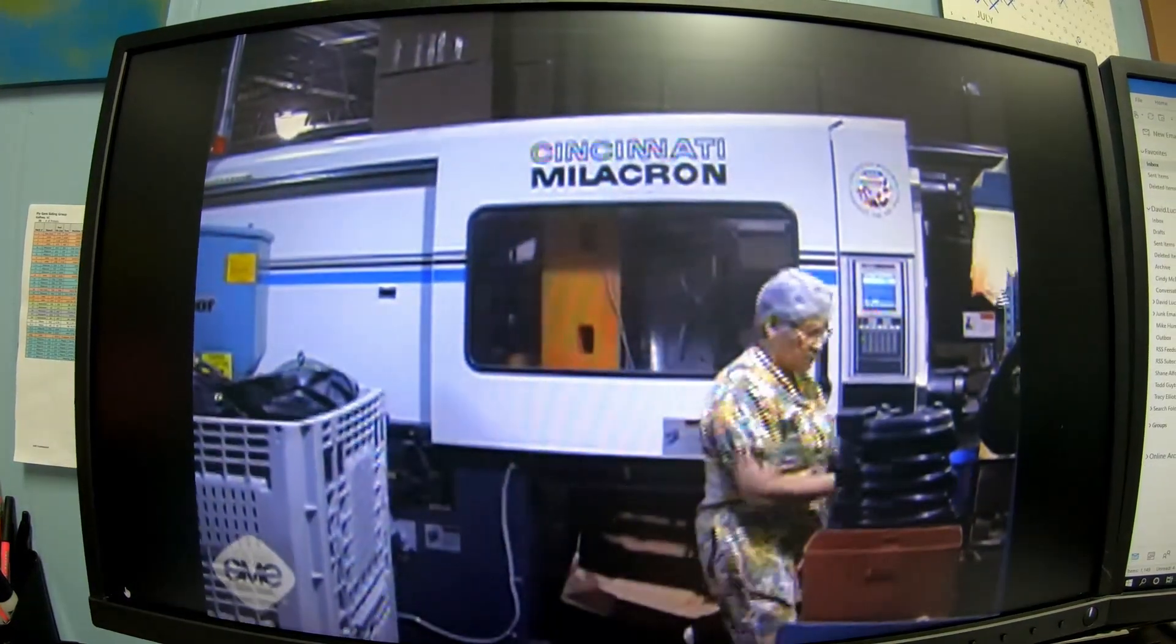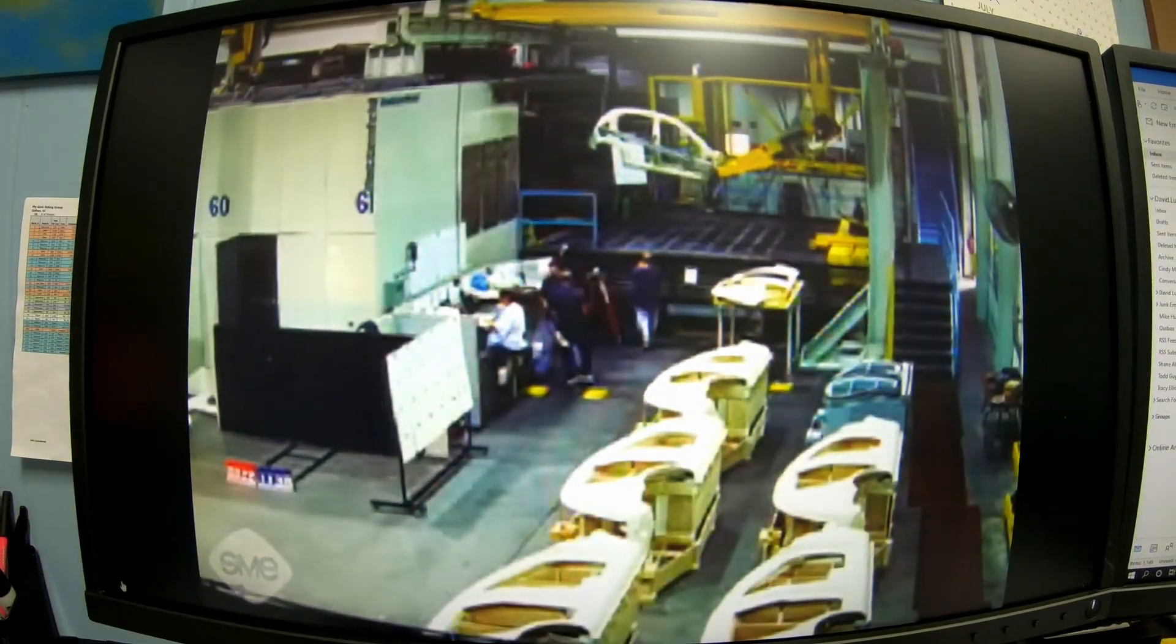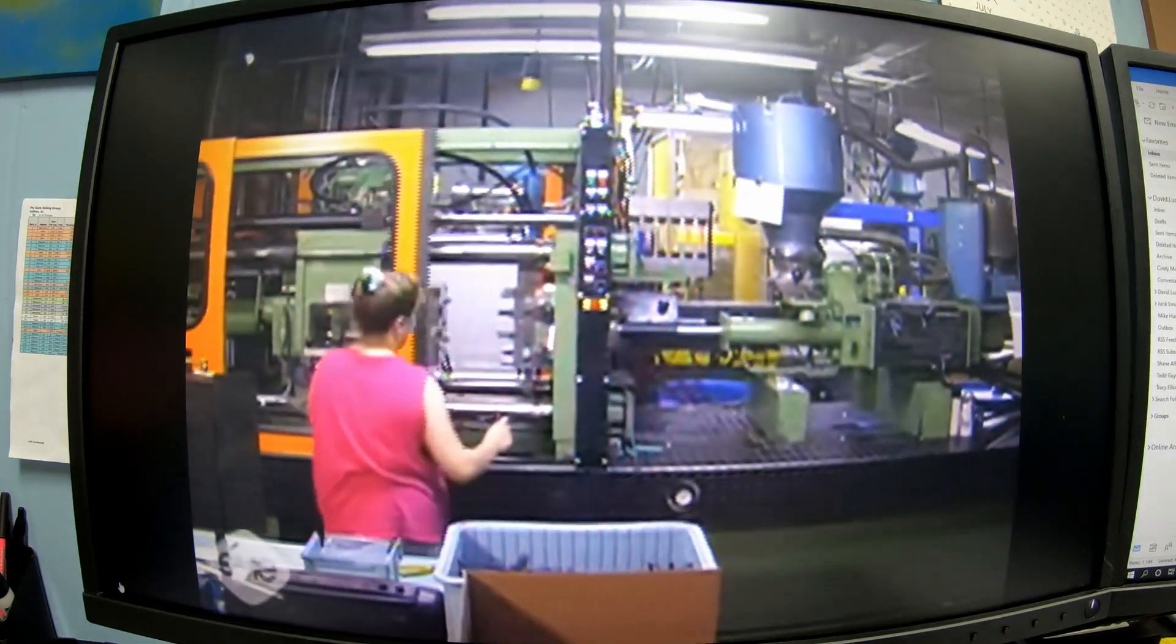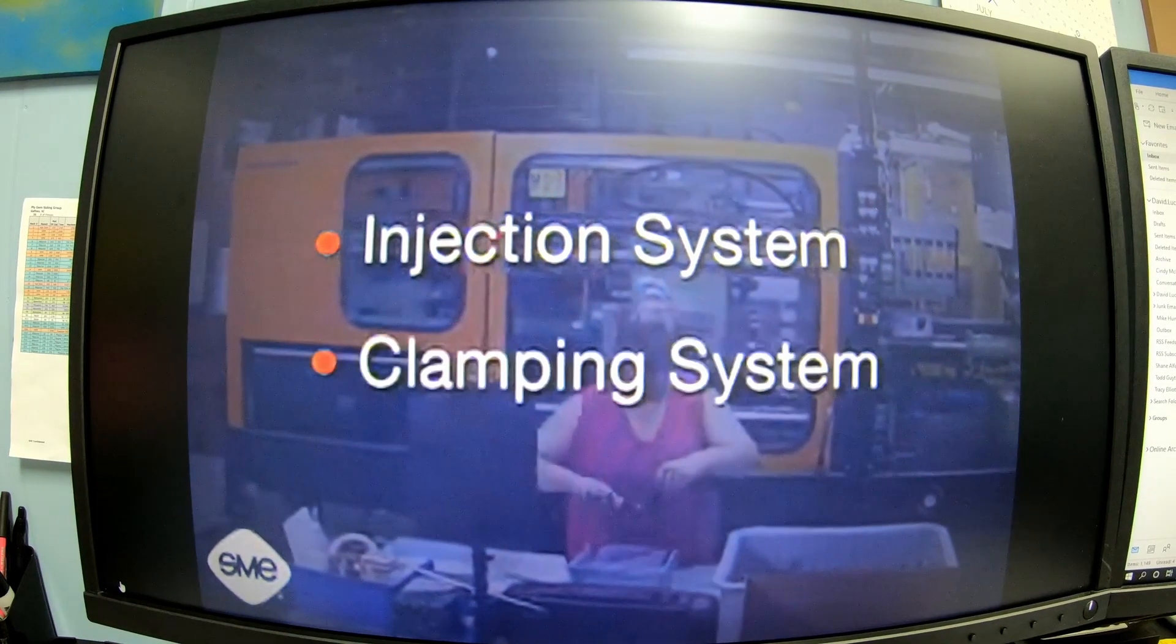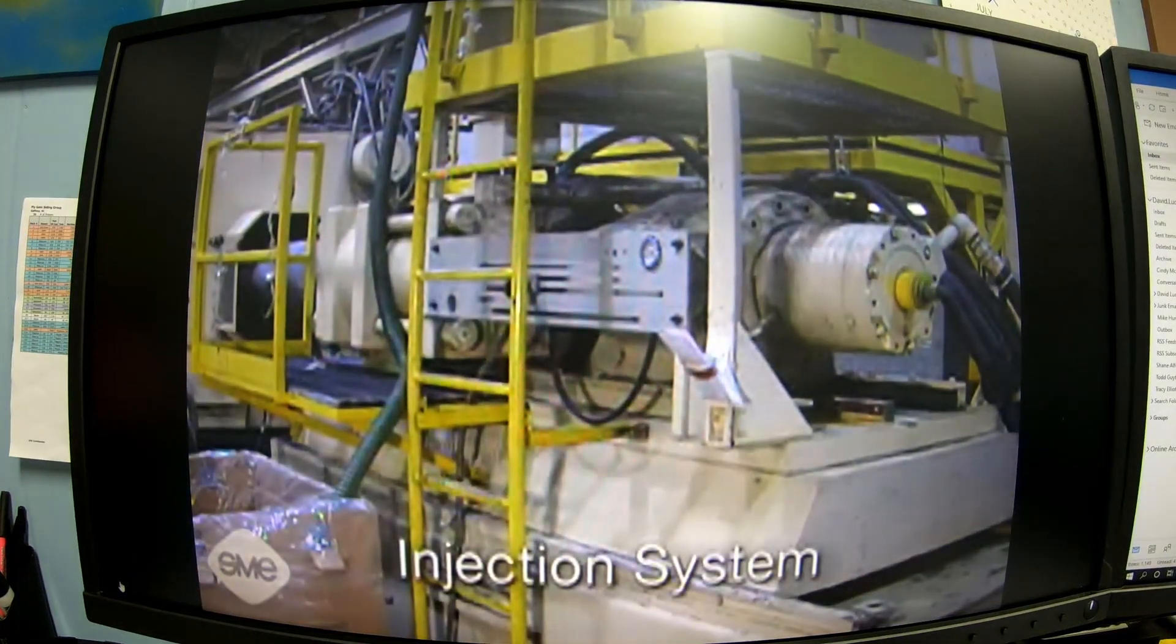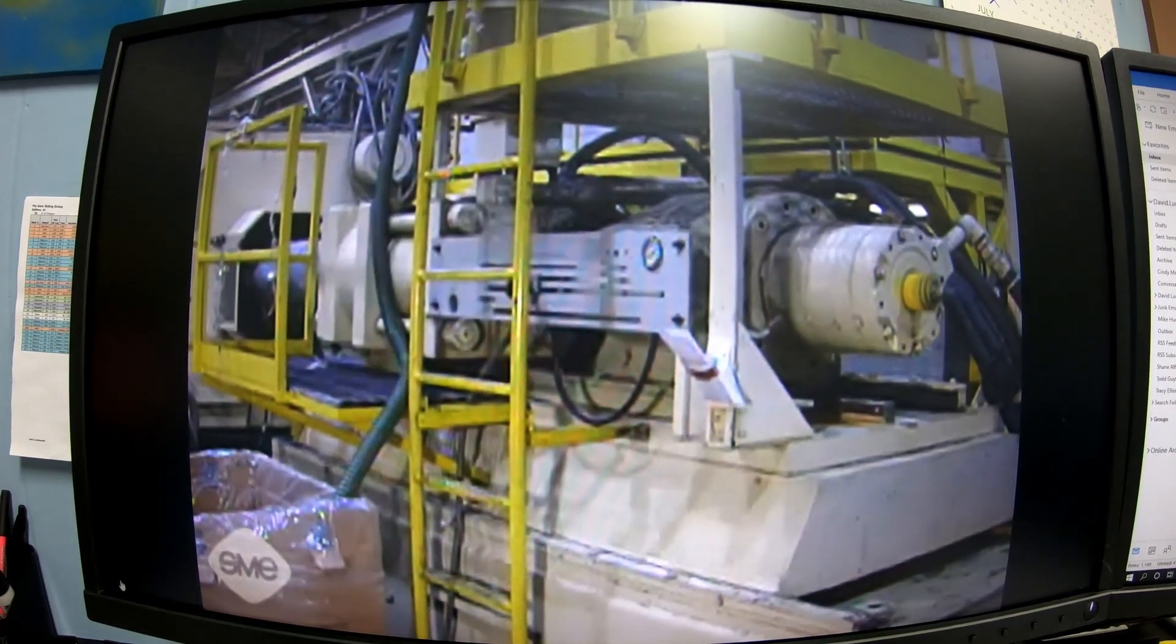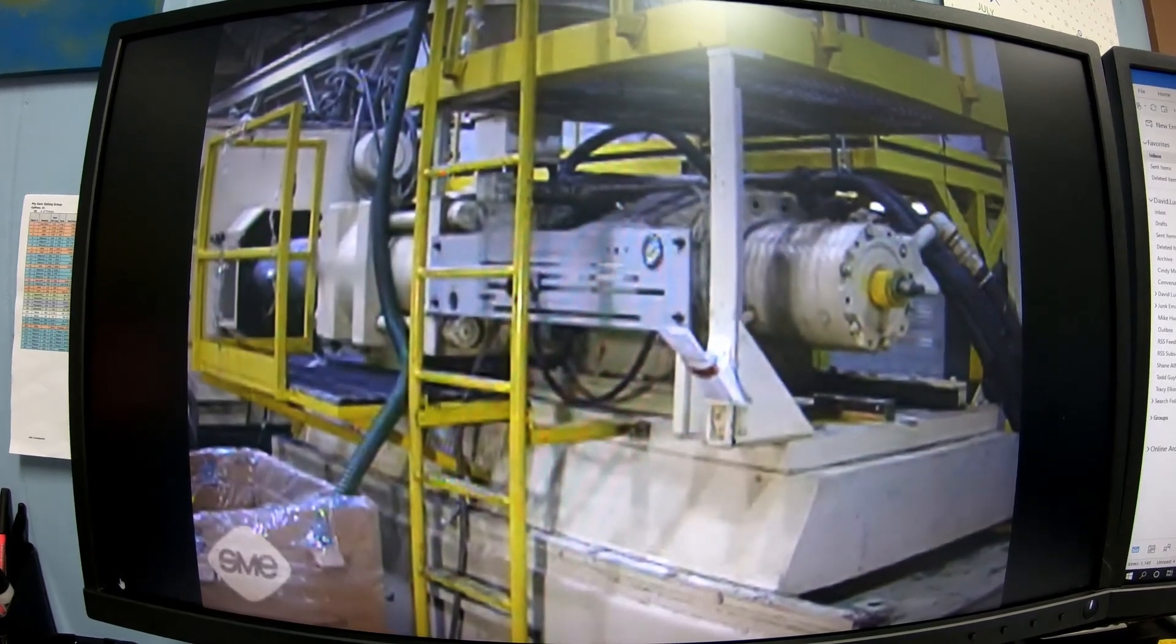Injection molding machines range in size and complexity from desk size units up to machines the size of a small house. All injection molding machines are a combination of two systems: an injection system and a clamping system. The injection system heats the thermoplastic material to its appropriate viscosity or flowability and then forcefully injects it into the mold.